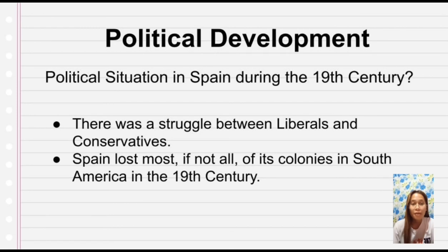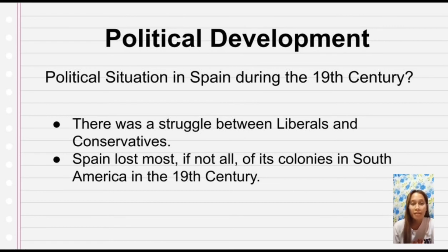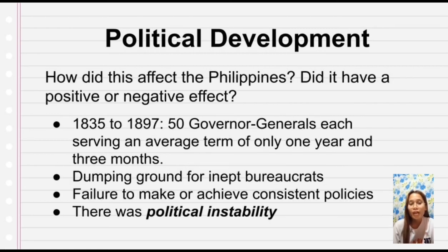In the 19th century, because of these civil wars between the liberals and the conservatives, Spain's colonies in South America — including Argentina, Colombia, Venezuela, Chile, Bolivia, Peru, and even Mexico — gained their independence during the early part of the 19th century. So how did this affect the Philippines? We can say that in the 19th century, Spain was characterized by political instability.